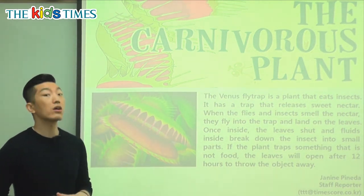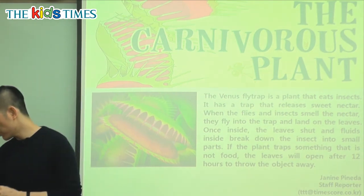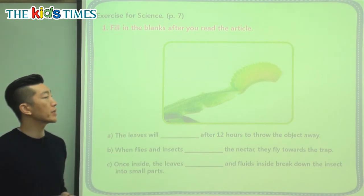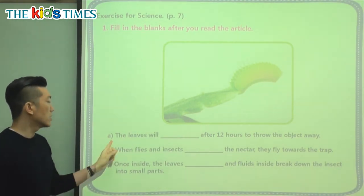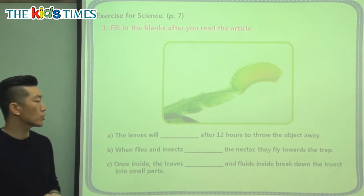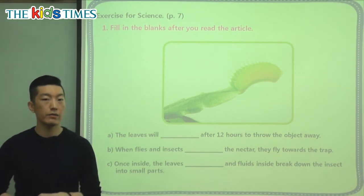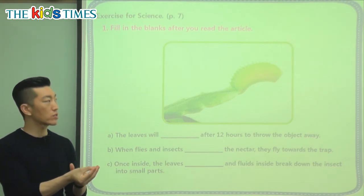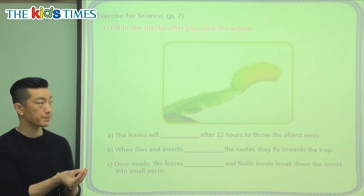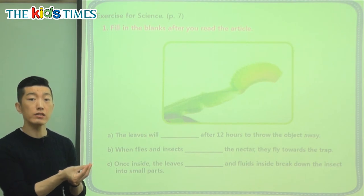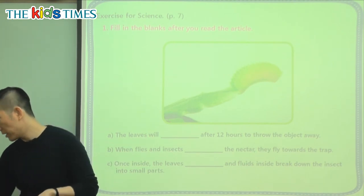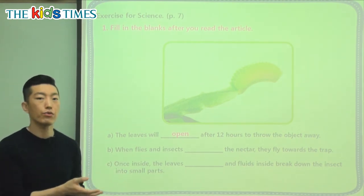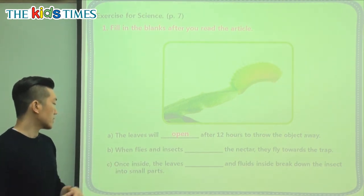So this is the Venus flytrap, a carnivorous plant — very interesting. Let's take a look at today's questions. Here's another picture of what the Venus flytrap looks like. The leaves will blank after 12 hours to throw the object away. What will the leaves do after 12 hours of holding something that's not food? That's right — it will open after 12 hours and throw the object away.